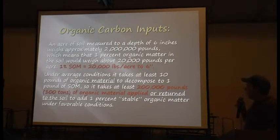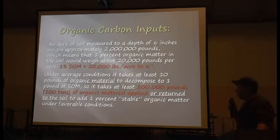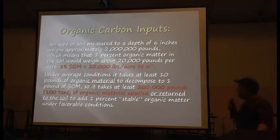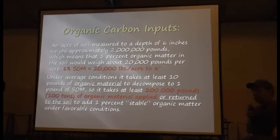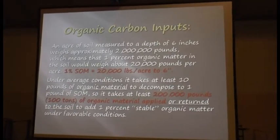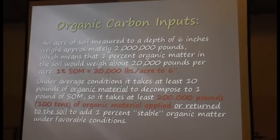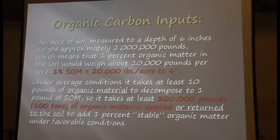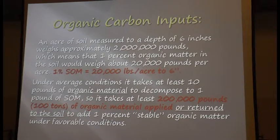This is a repeat of what Dave was just saying, but the words in red are what I'd like you to remember. One percent of soil organic matter equals 20,000 pounds per acre to six inches — that's just on average. And it takes 100 tons of organic material applied back to the soil in order to get that one percent. So the point is it takes a lot of material to get that one percent organic matter.